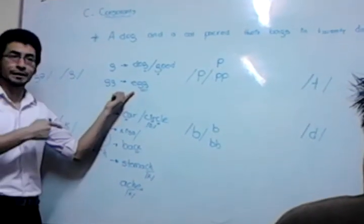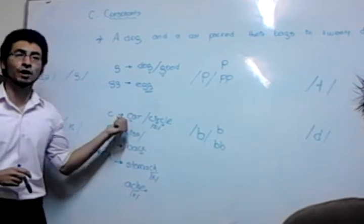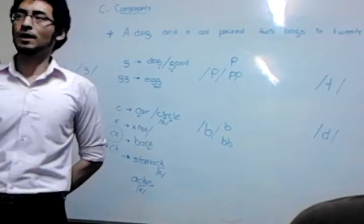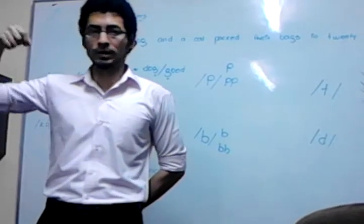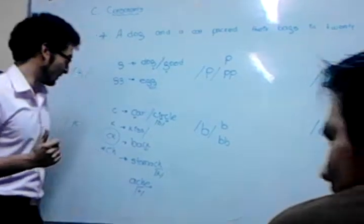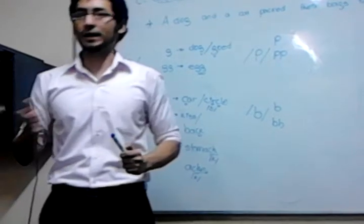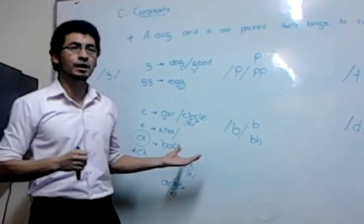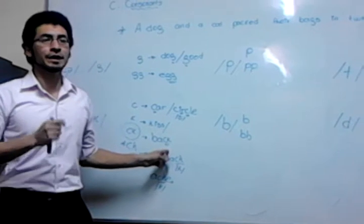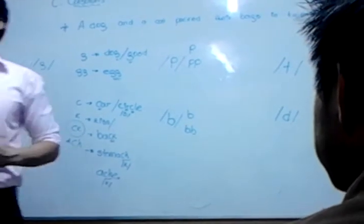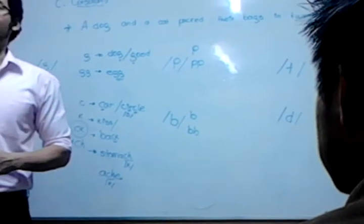Continue. Egg. Car. Circle. Kiss. What is the name of the objects for opening doors in plural? Keys. Again — keys. Back. Back. Back. Please listen to my difference in pronunciation and then you produce it. Sometimes we pronounce the sound K very tiny — so you say 'back.' The K is present, yes, but not so much.